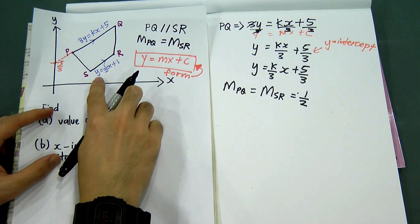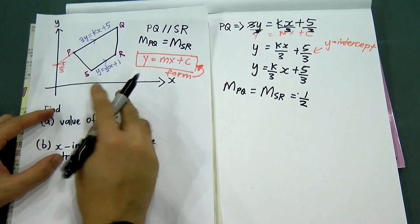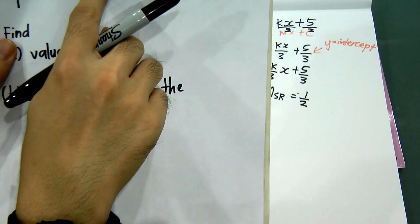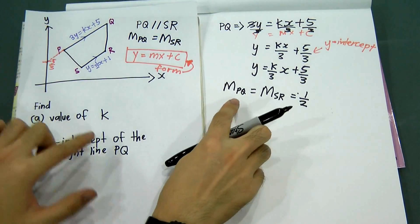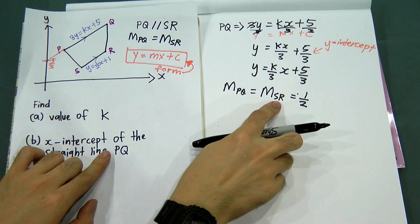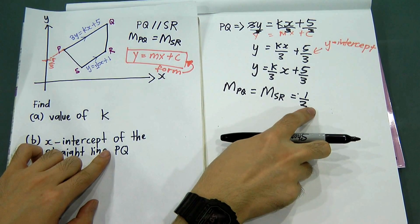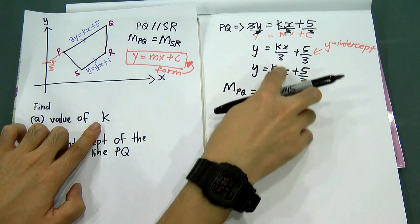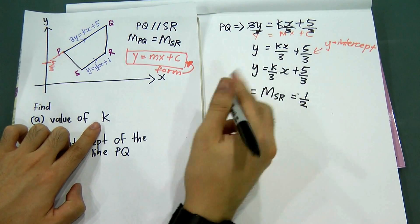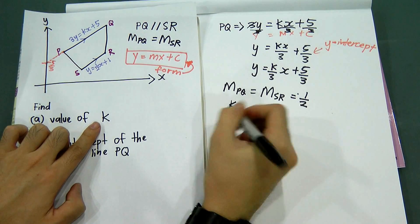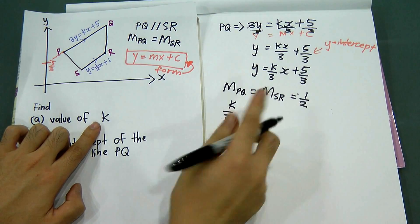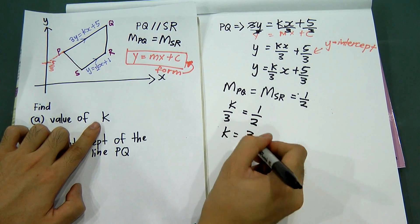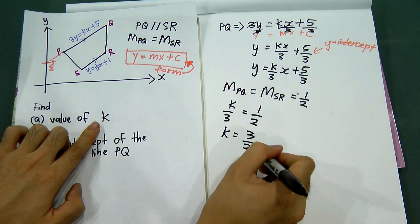Why is the gradient 1/2? Because in y = mx + c, m is 1/2. So the gradient for PQ equals the gradient for SR equals 1/2. To find k, I take the gradient of PQ, which is k/3, and set it equal to 1/2. So k/3 = 1/2, therefore k = 3/2. That is the value for k.